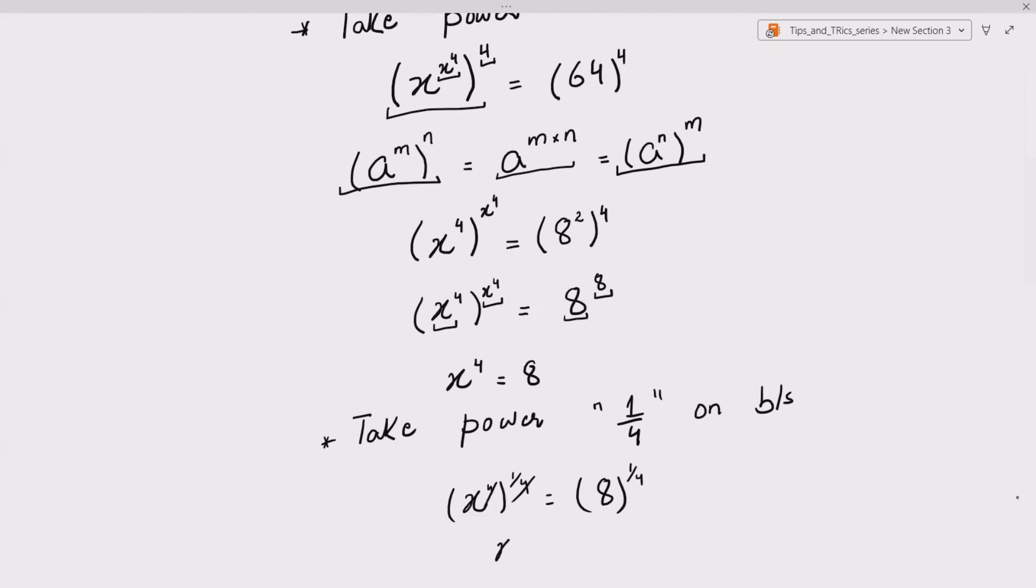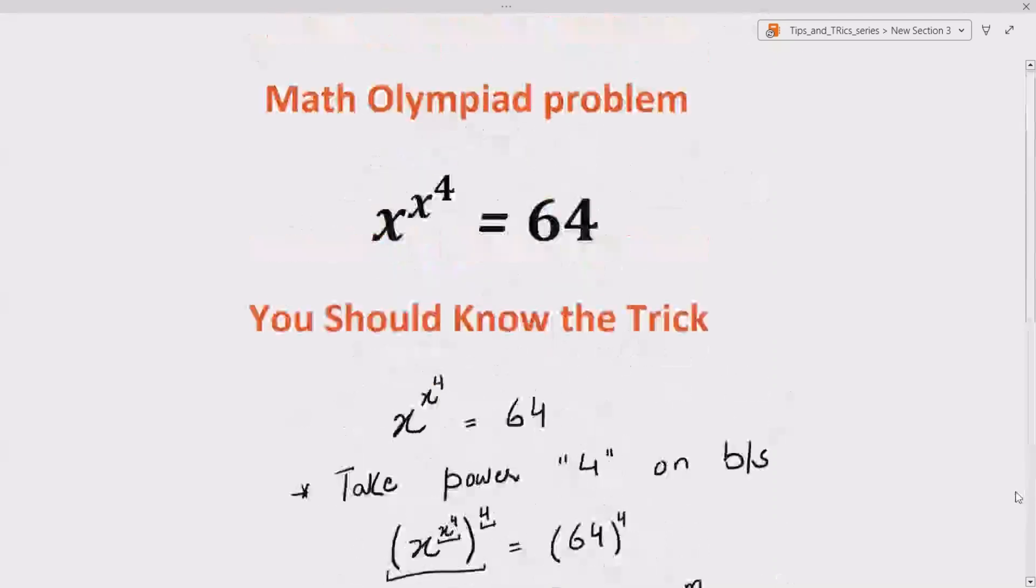So we got x equals, now since we are taking root, we got plus minus 4th root of 8. 1 upon 4 can be written as 4th root. So this is our answer. I hope you enjoyed this video. If you like this video, share with your friends and colleagues. Until the next video, bye bye.